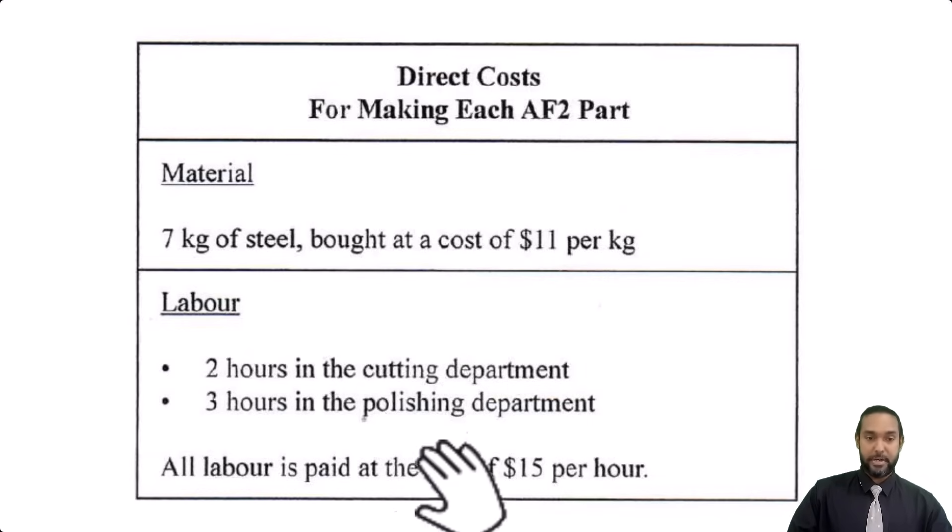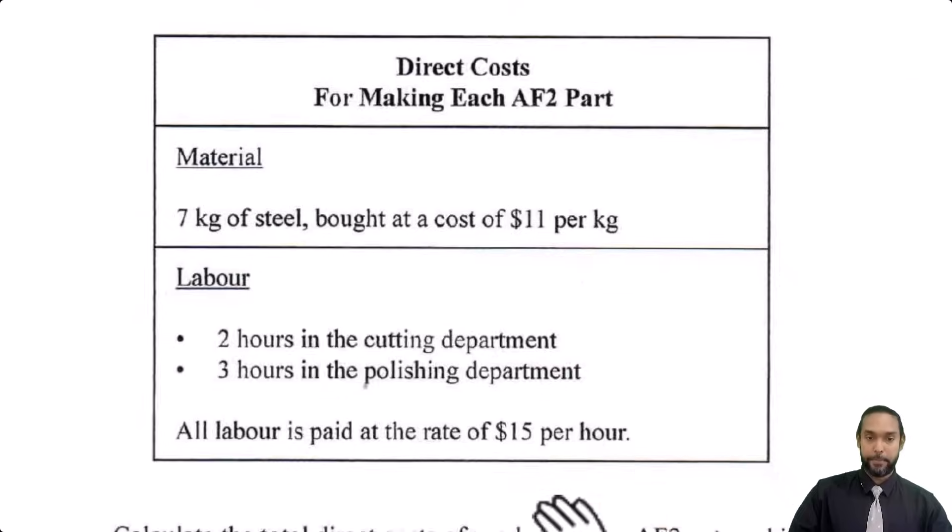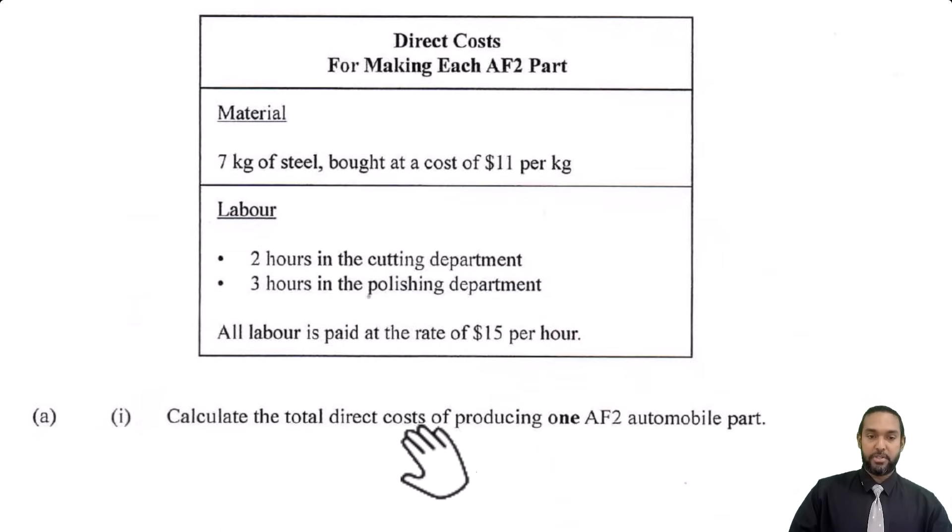Labor: two hours in the cutting department, three hours in the polishing department. All labor is paid at the rate of $15 per hour. Calculate the total direct costs of producing one AF2 automobile part.